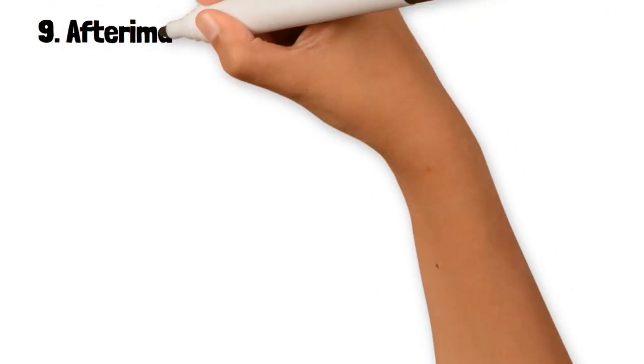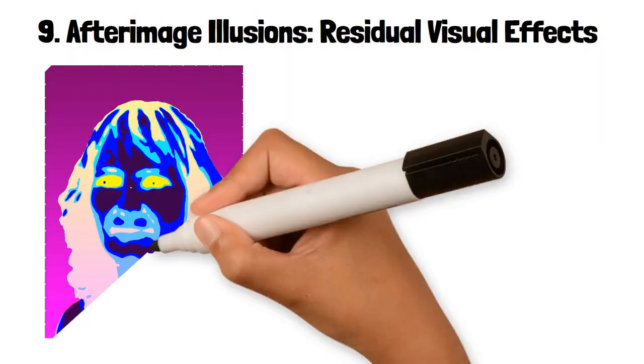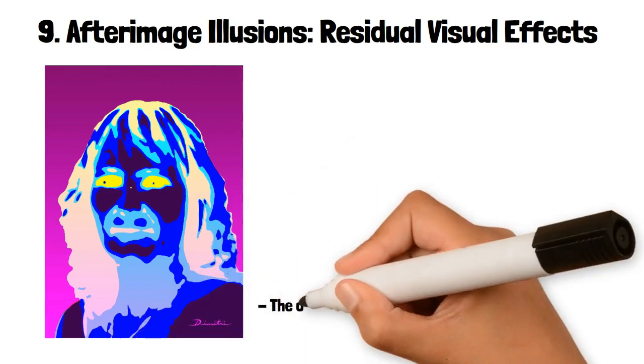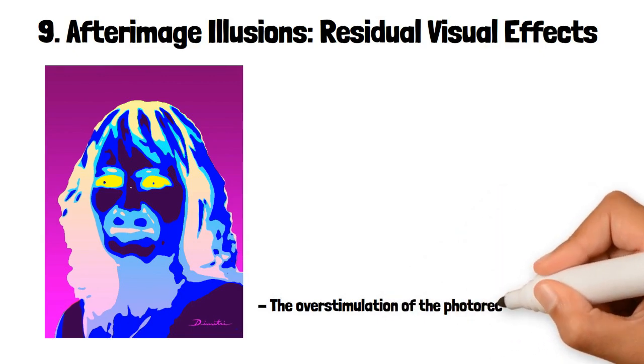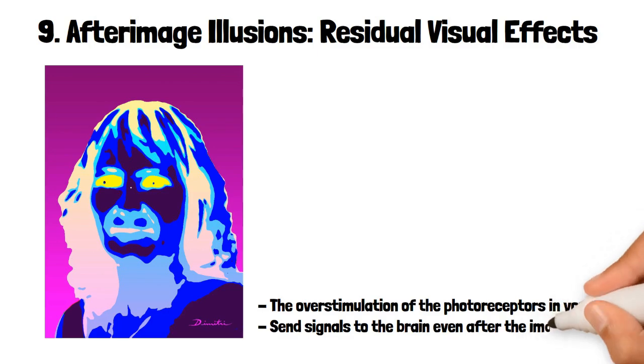9. Afterimage Illusions: Residual Visual Effects. Afterimage illusions occur when you continue to see an image after looking away from it, typically after staring at it for a prolonged period. This is due to the overstimulation of the photoreceptors in your eyes, which continue to send signals to the brain even after the image is gone.